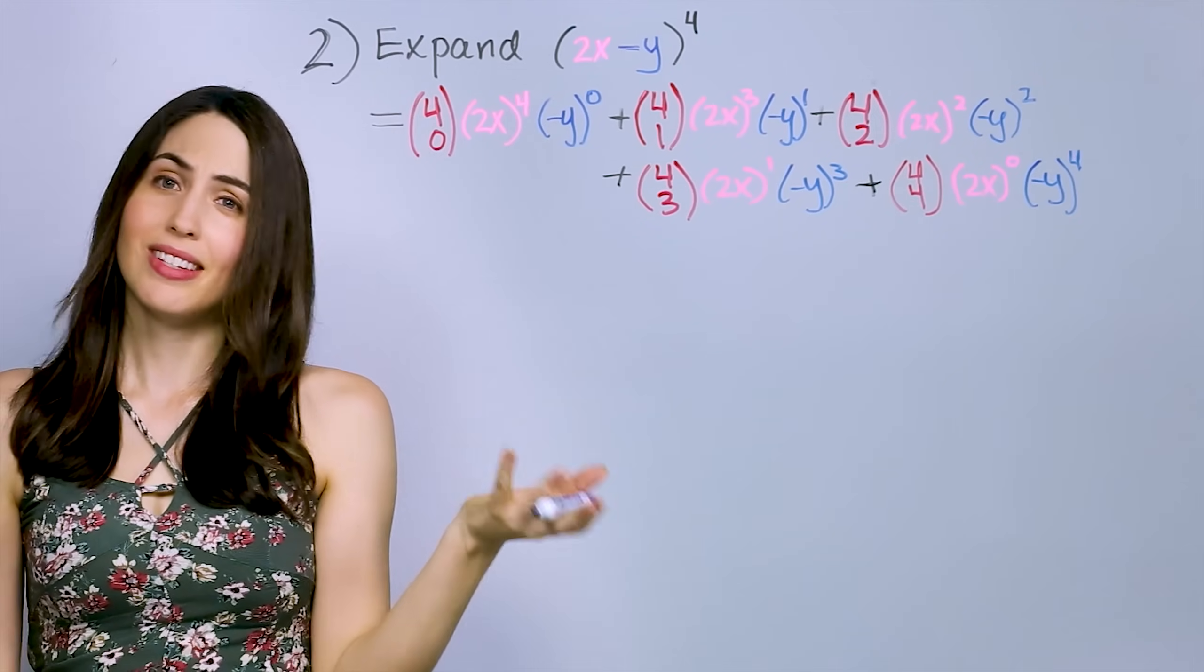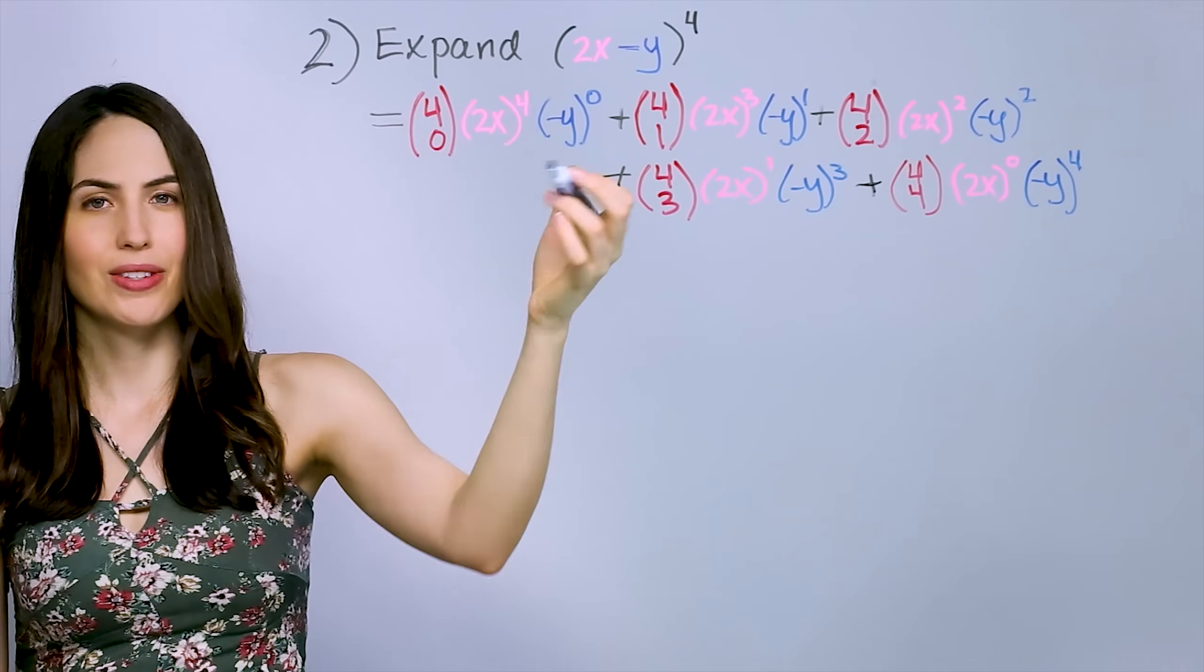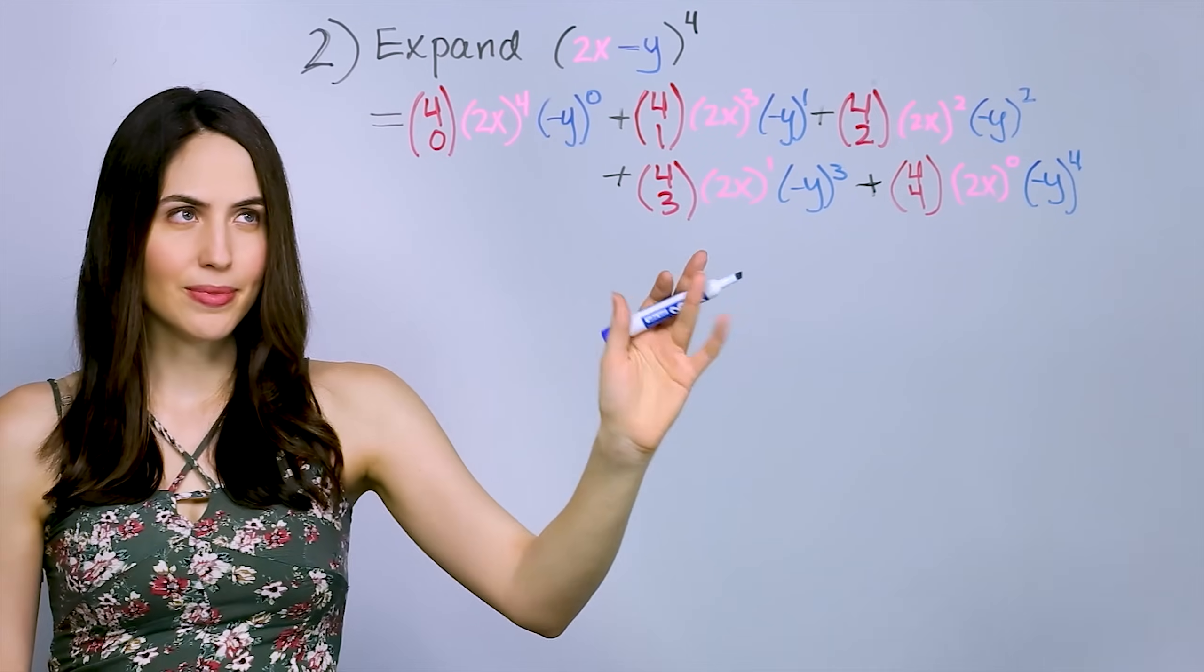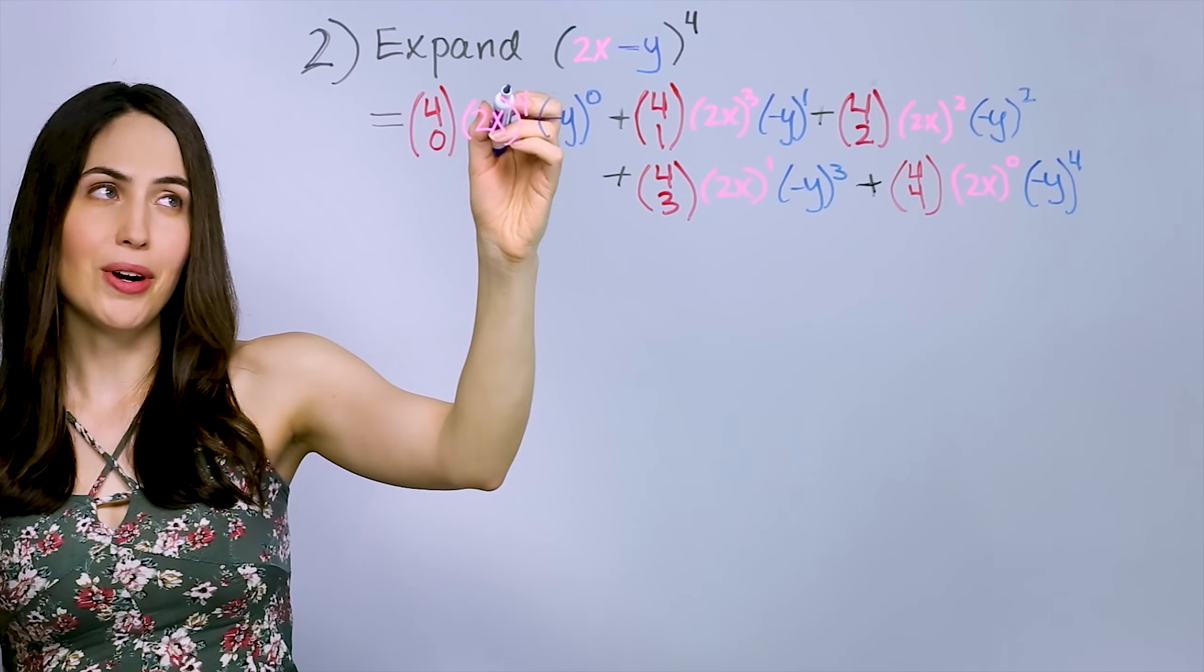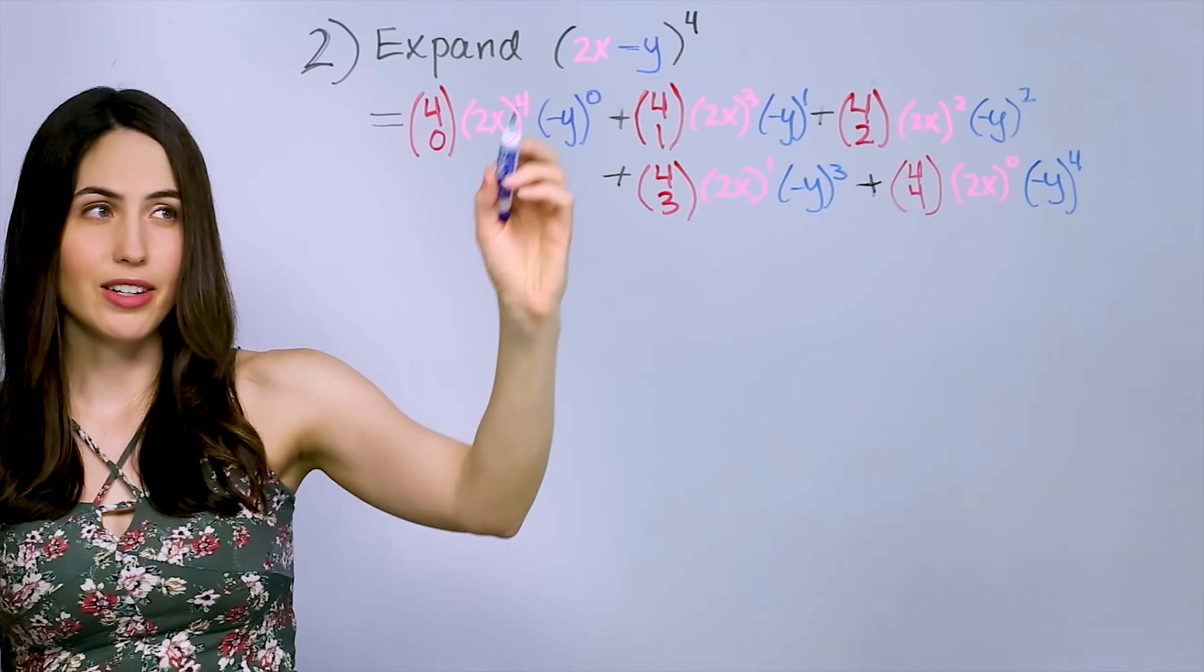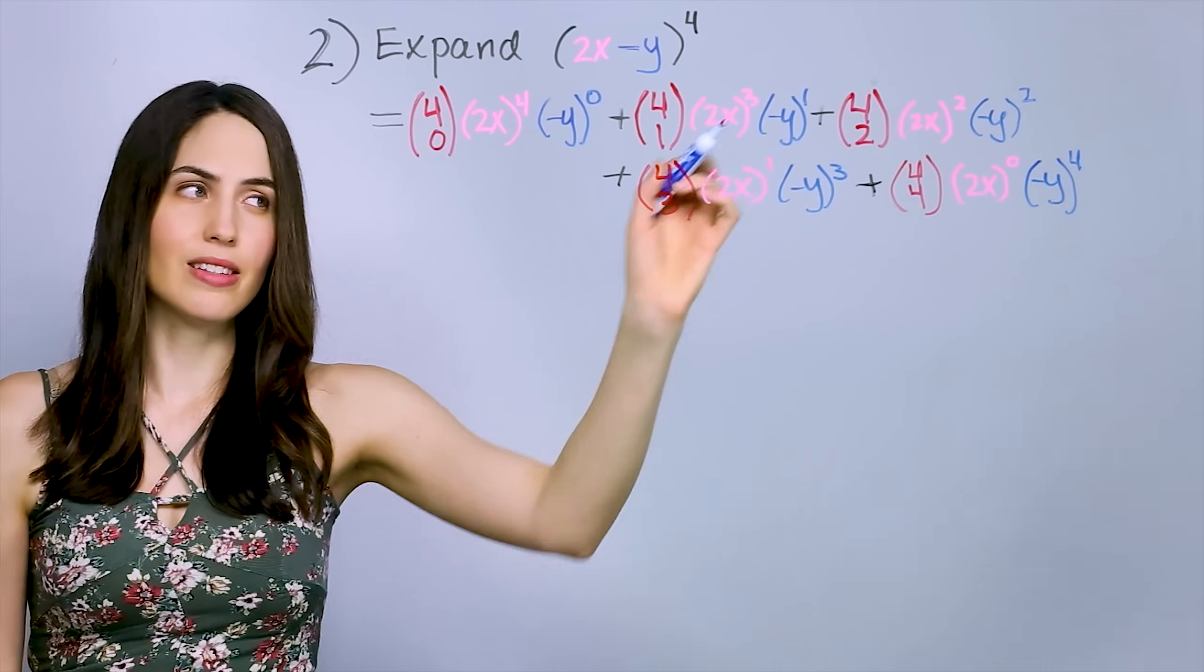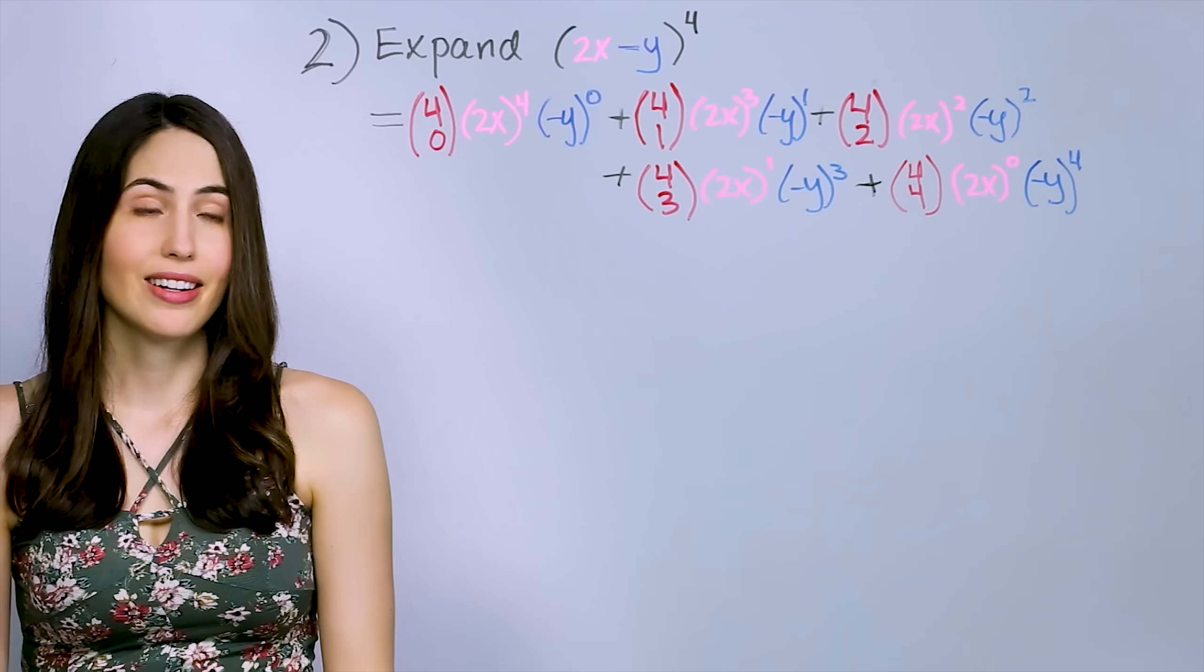So that's it. That's the expansion. It's not so bad, right? It's the same idea as before, those coefficients. You know how to get those 4, 0, 4, 1, 4, 2, etc. First factor gets raised to the highest number power, our power number, and then goes down each term. Second factor gets raised to the lowest, 0, and then increases on each term. You just need to simplify it.